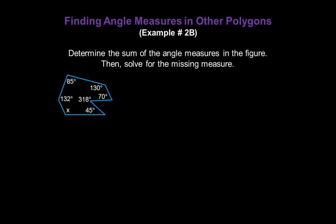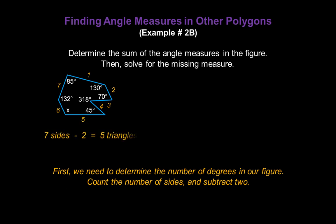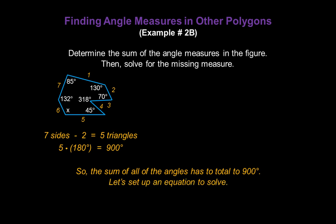Let's do one more. Determine the sum of the angle measures in this figure, then solve for the missing measure x. Count the number of sides: one, two, three, four, five, six, seven sides. Seven sides minus two tells us this figure can be cut into five triangles. Five times 180 degrees gives us 900 degrees, so the sum of all the angles has to total 900. Setting up the equation: 85 plus 132 plus 130 plus 70 plus 318 plus 45 plus x equals 900.